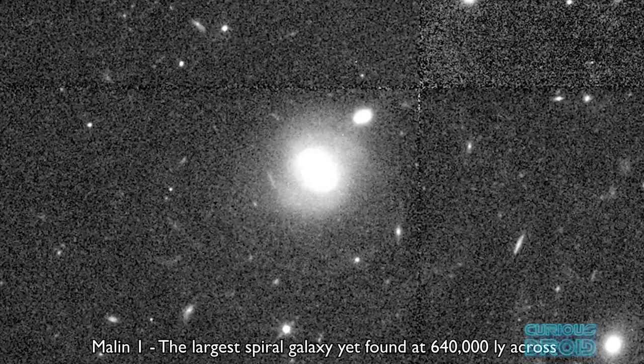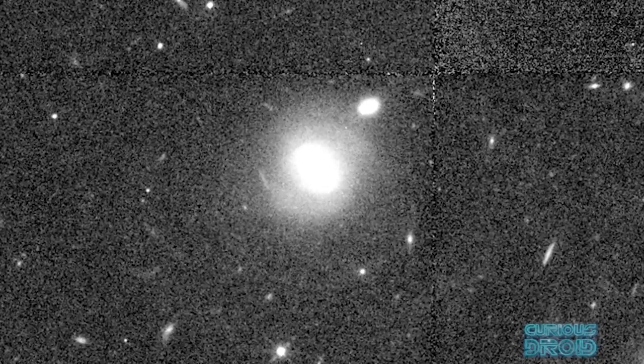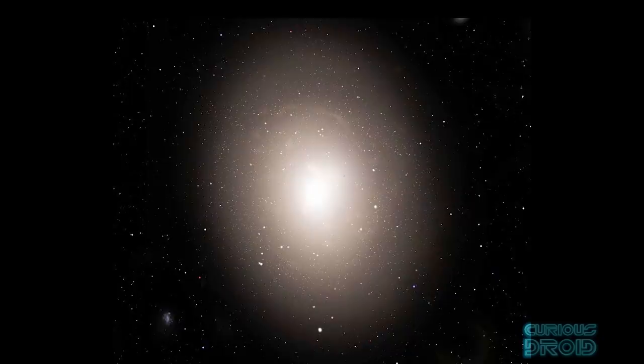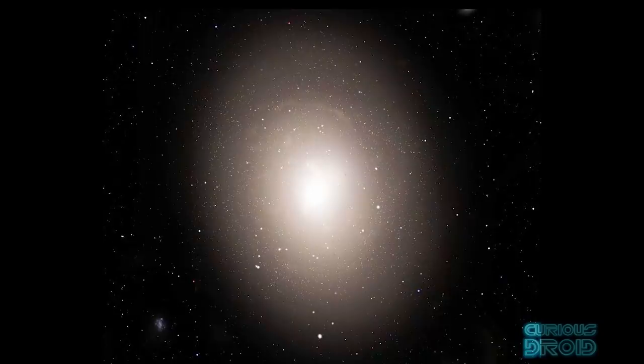Malin-1 is a low surface brightness spiral galaxy in the biggest spiral type yet found at 640,000 light years across and 1.19 billion light years away from us. However, one of the biggest galaxies yet found is IC 1101, a supergiant elliptical galaxy with a diameter of its halo stretching over 4 million light years.